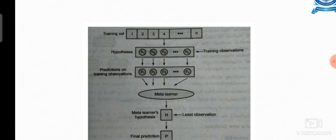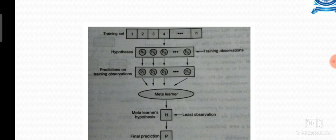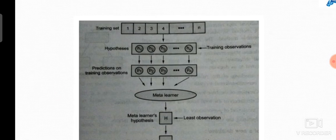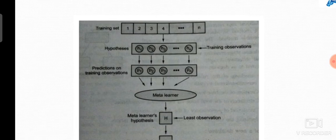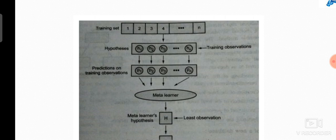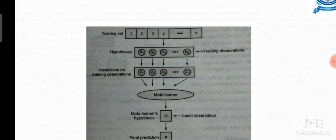From the hypotheses, the predictions will be taken, that is P1, P2 up to Pn. All the individual predictions will be applied to the meta learner. These individual predictions, n number of predictions were made by n number of learners, n number of models, and all the predictions will be applied to the meta learner.